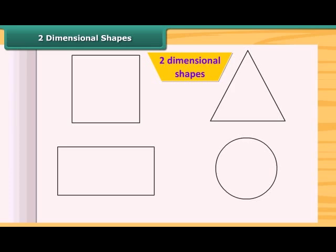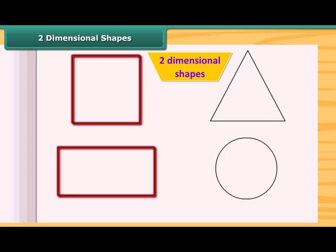A square, rectangle, triangle, circle, etc. are the examples of two-dimensional shapes.